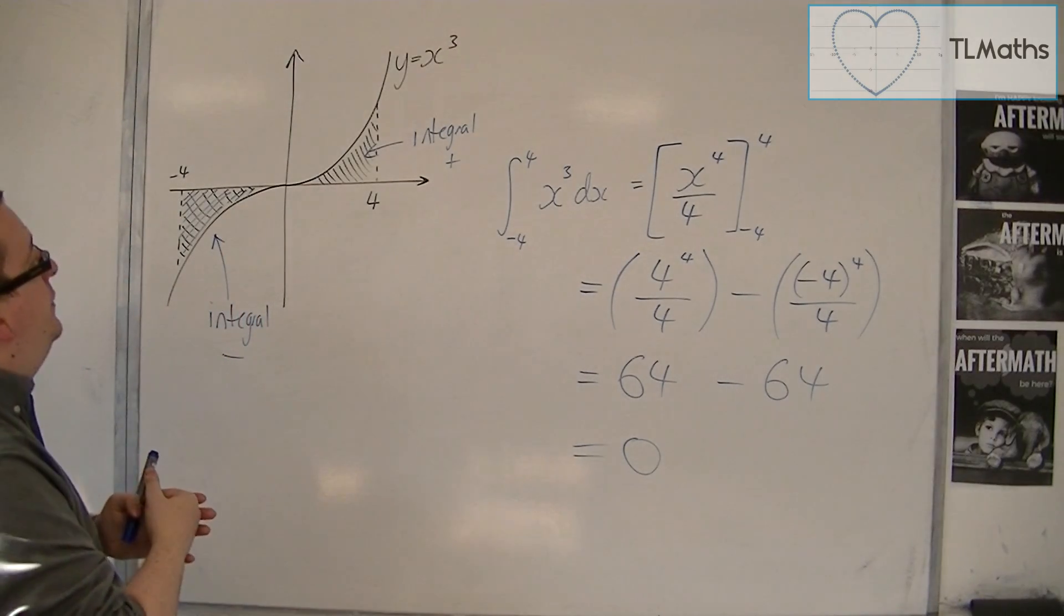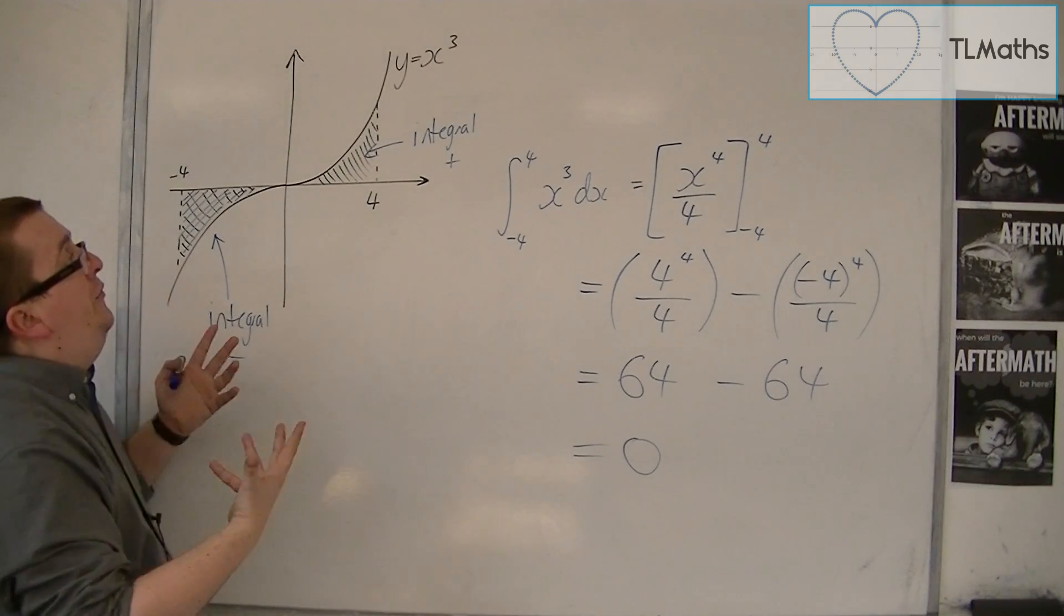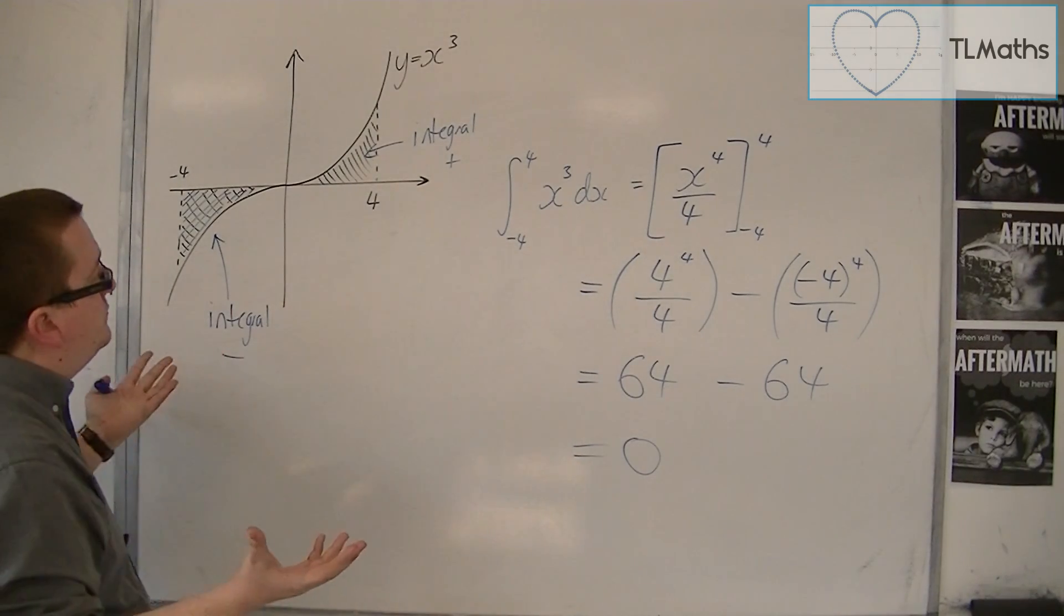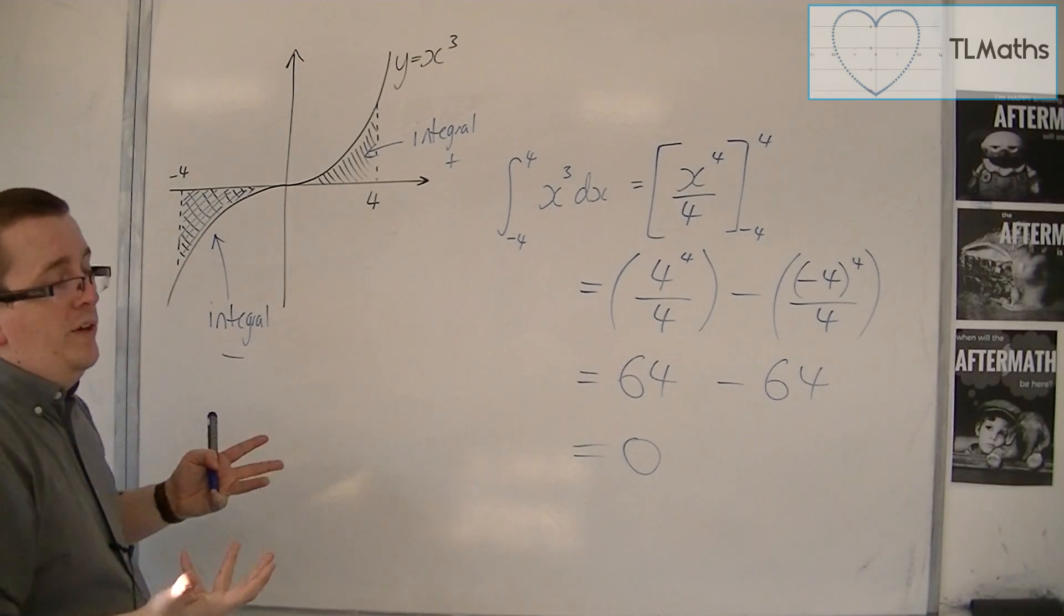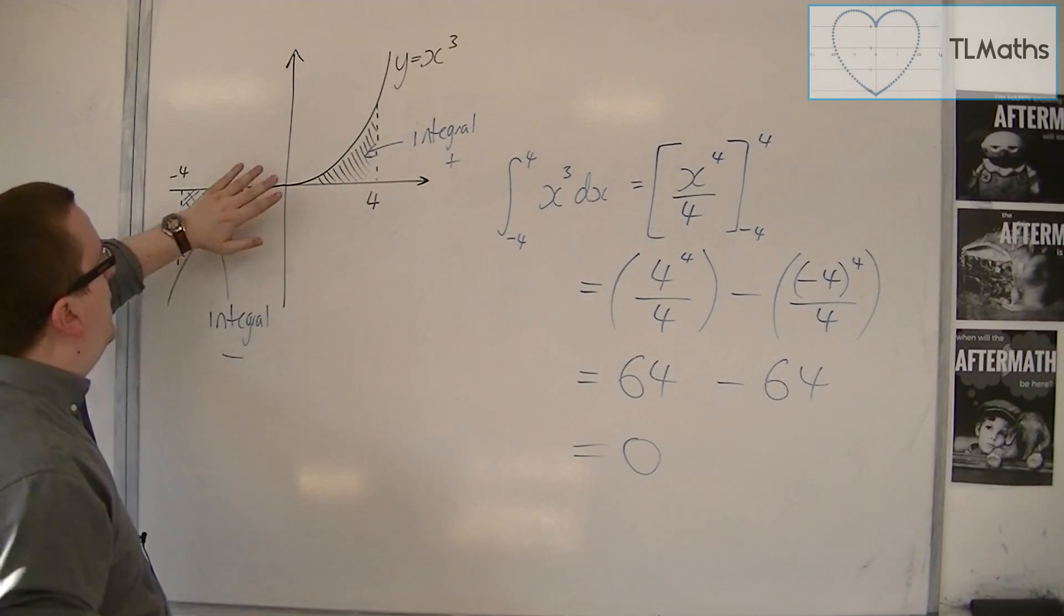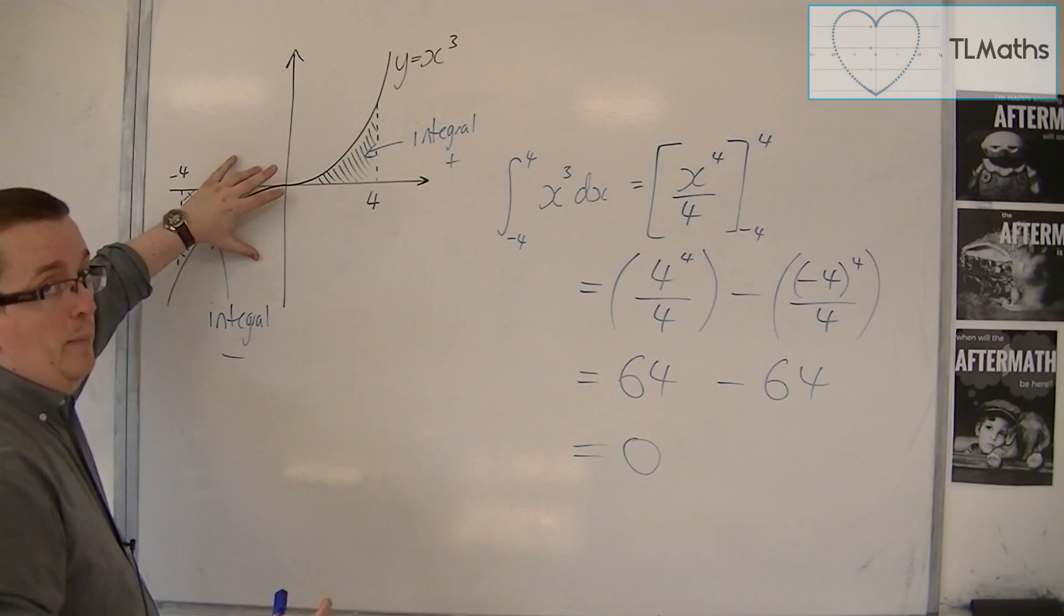So how would you do this? Well, because of the symmetric nature of y equals x cubed, we know that we could just find that area and then double it.